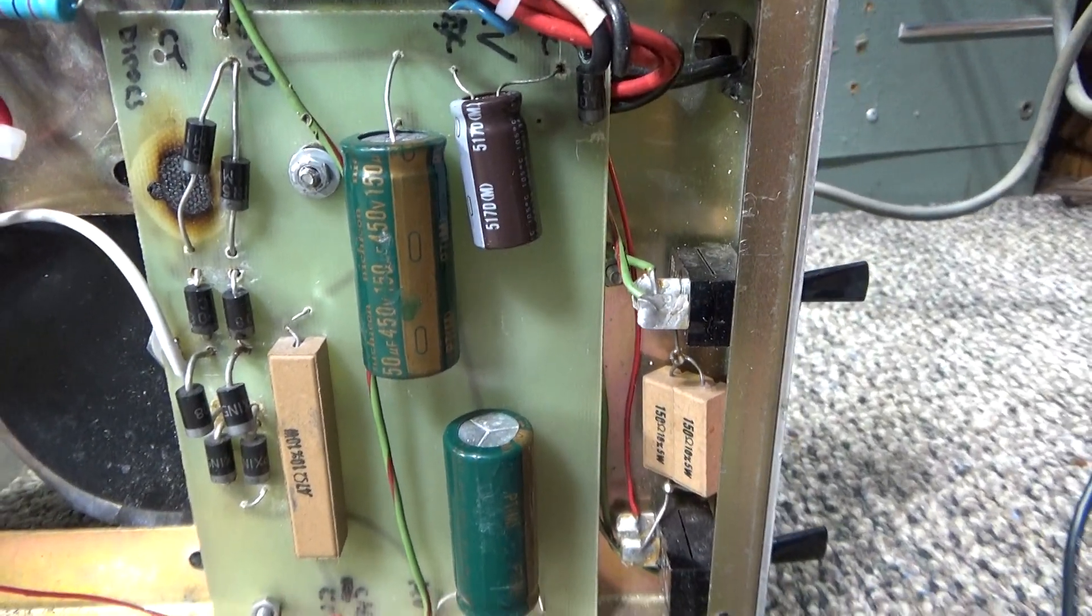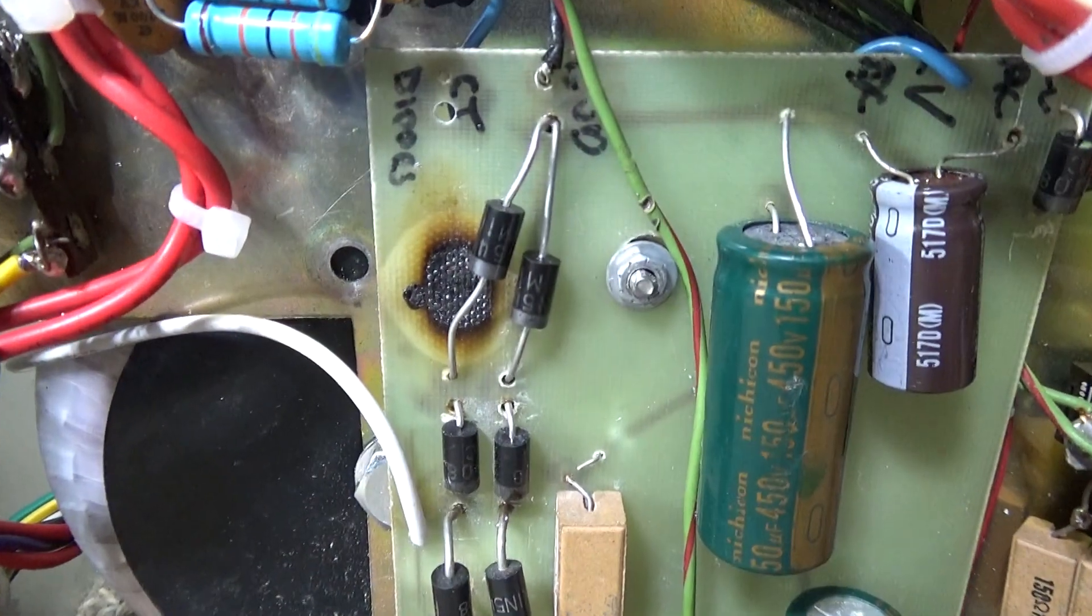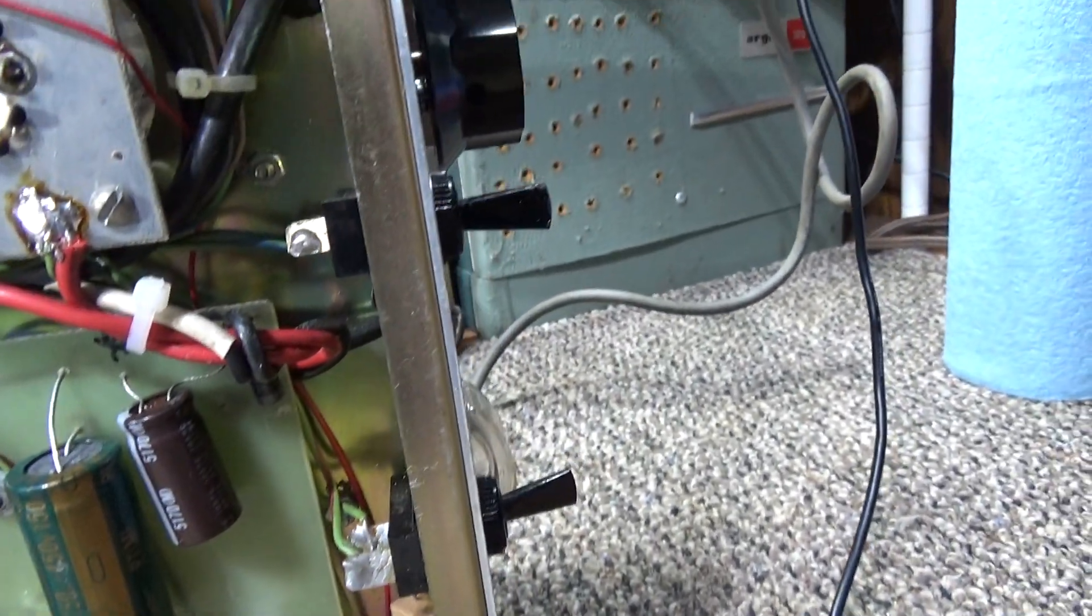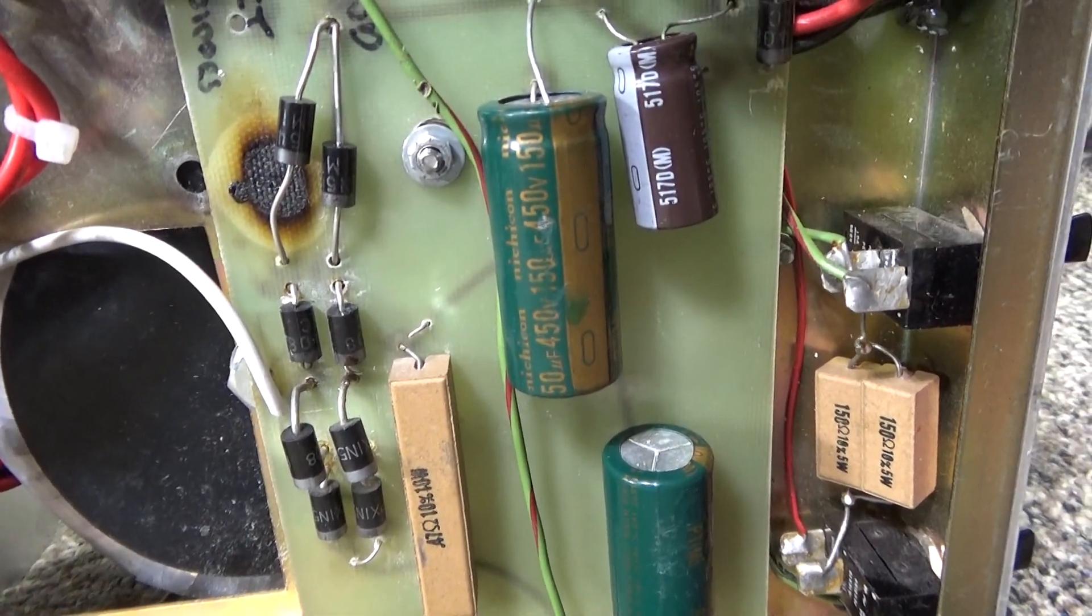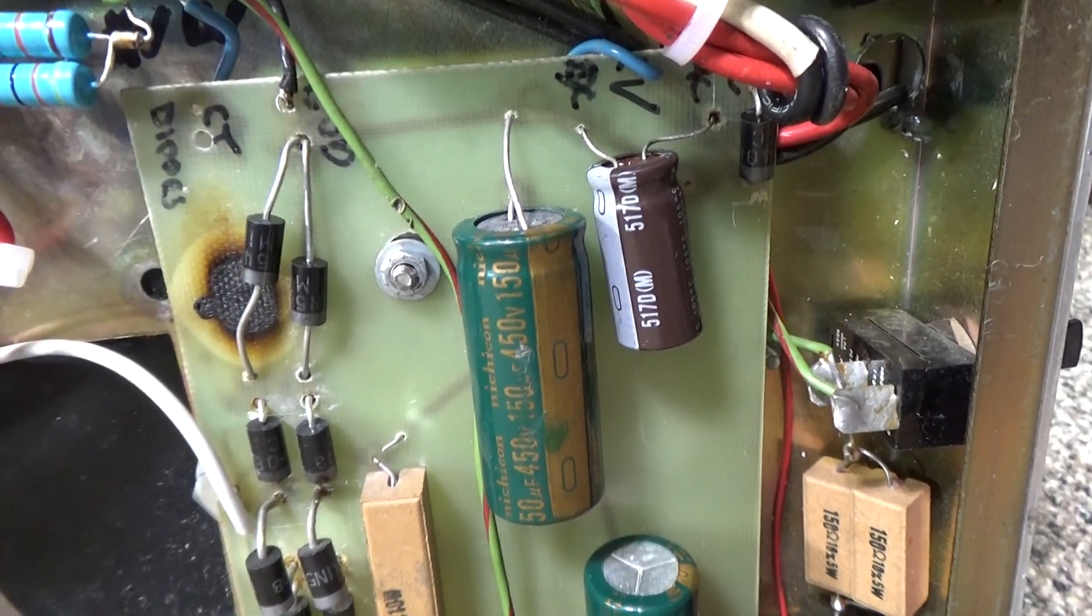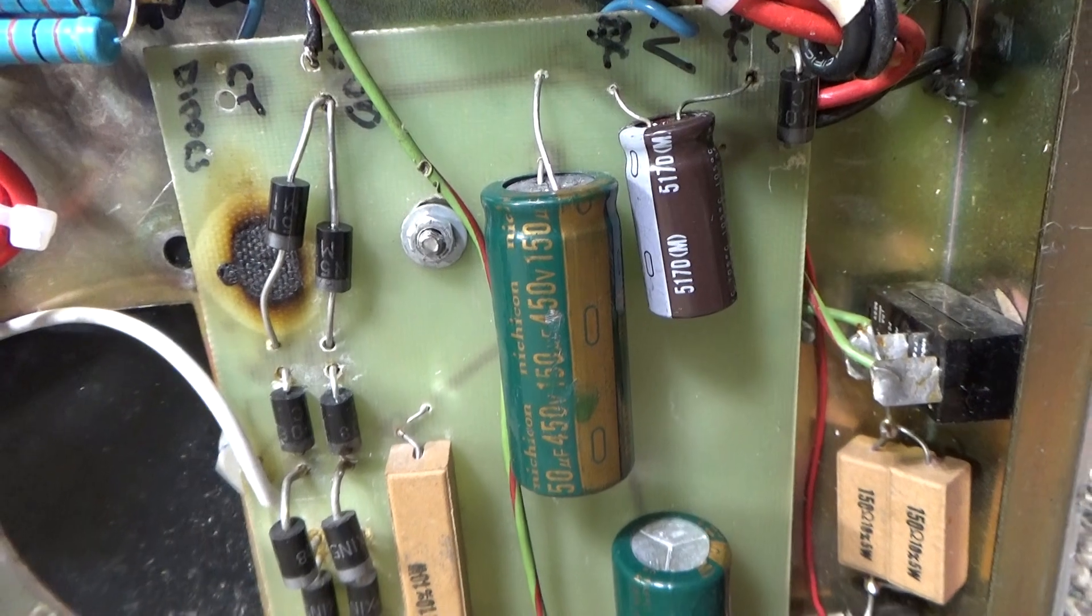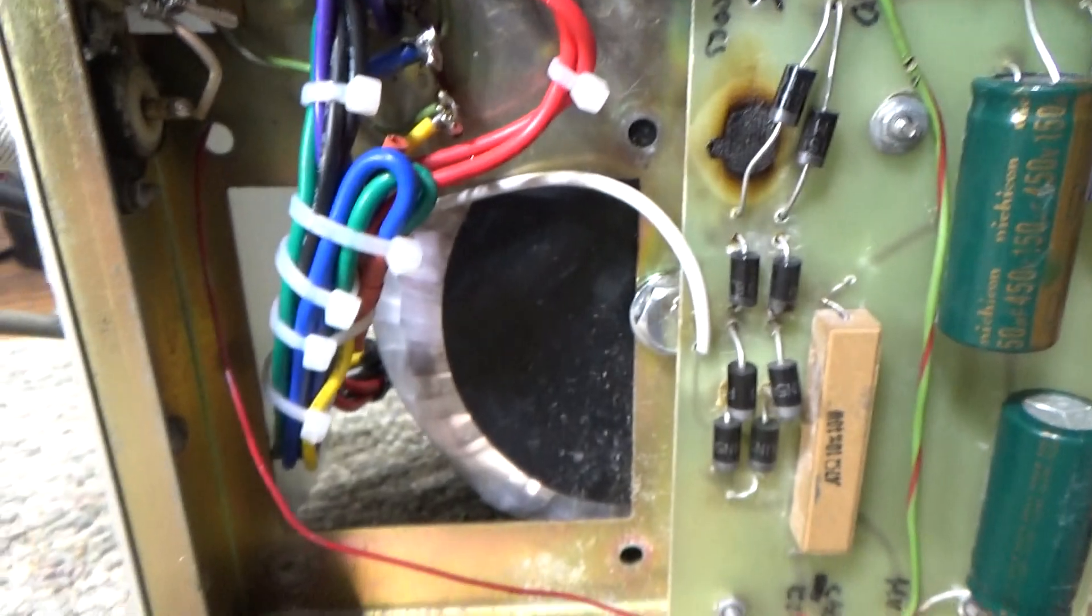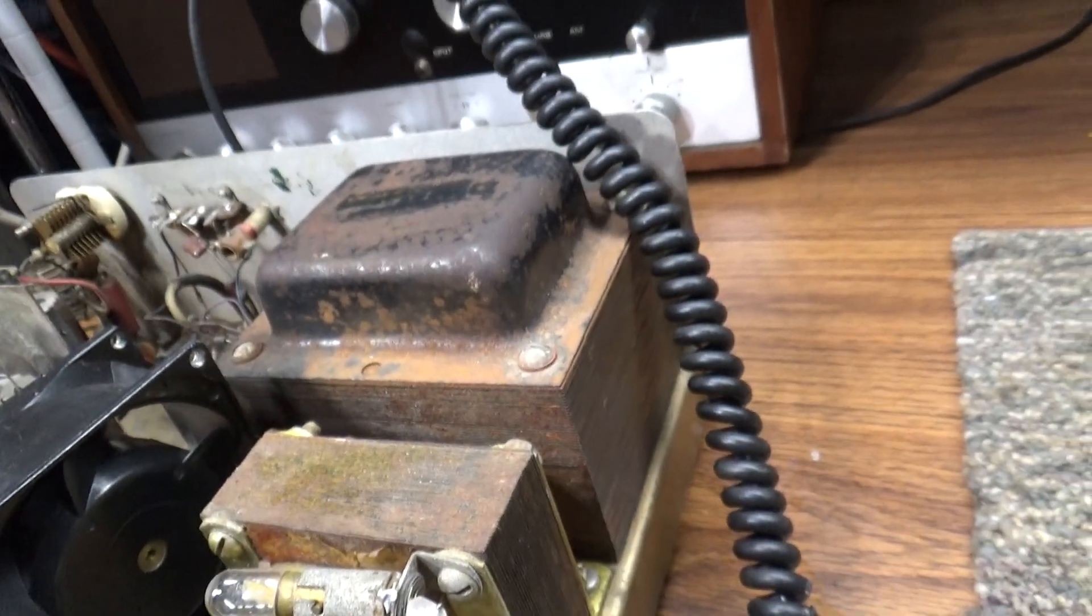Everything's been replaced now, but you can see the burn mark here. What happened was the original high voltage caps—these green ones are the replacement—shorted dead short. The short on the caps took out the power supply high voltage diodes, a couple of them, and you can see that big burn mark there. When the diode shorted out, it took out the power transformer.